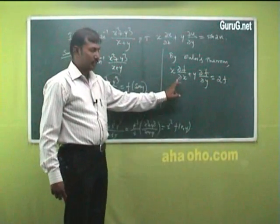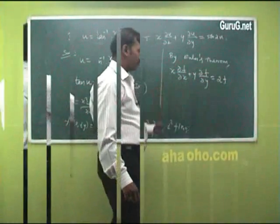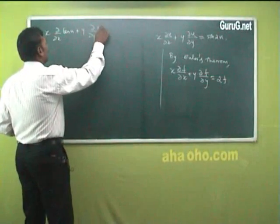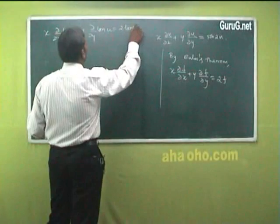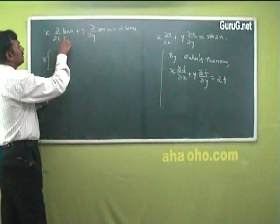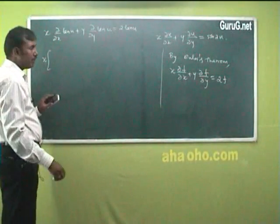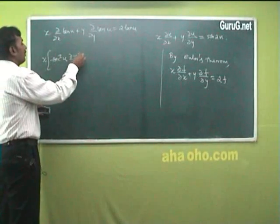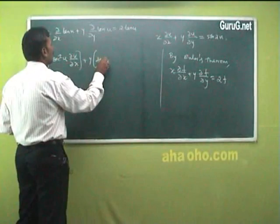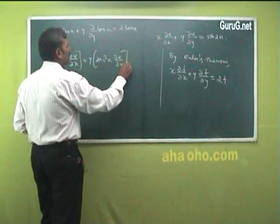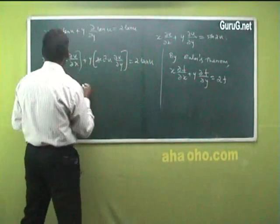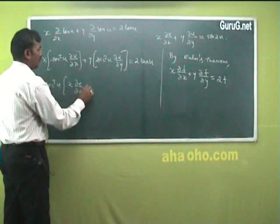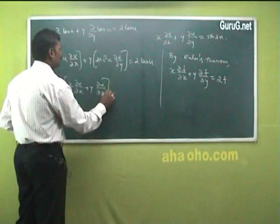By using Euler's theorem, x·∂f/∂x + y·∂f/∂y = 2f. Since f = tan(u), we write: x·∂/∂x(tan u) + y·∂/∂y(tan u) = 2·tan(u). Differentiating: the derivative of tan(u) with respect to x is sec²(u)·∂u/∂x. So x·sec²(u)·∂u/∂x + y·sec²(u)·∂u/∂y = 2·tan(u). Taking sec²(u) outside: sec²(u)·(x·∂u/∂x + y·∂u/∂y) = 2·tan(u).